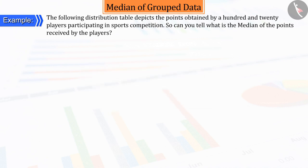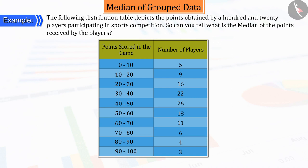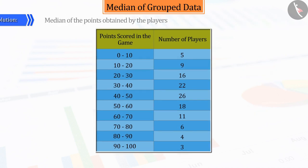The following distribution table depicts the points obtained by 120 players participating in sports competition. So, can you tell what is the median of the points received by the players? Let's see.